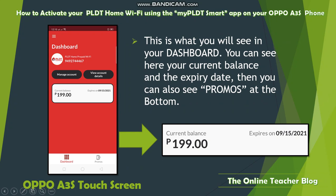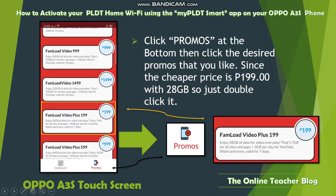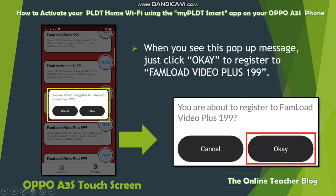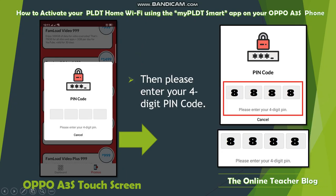In your dashboard, you can see your current balance and expiry date, as well as available promos at the bottom. The current balance is 199 pesos, expiring on September 15, 2021. Click 'Promos' at the bottom, then select your desired promo. The cheaper option is 199 pesos with 28GB. Double-click to select it, then click OK to register.